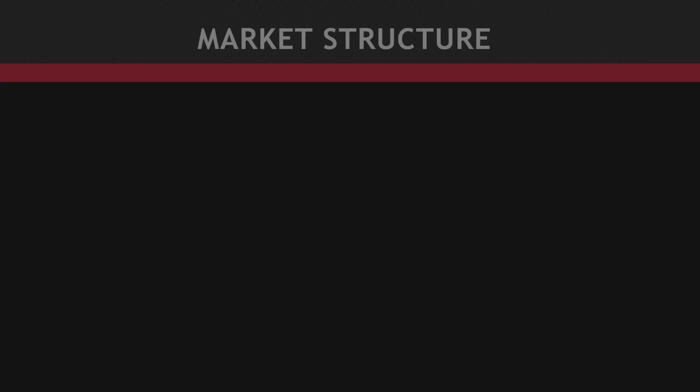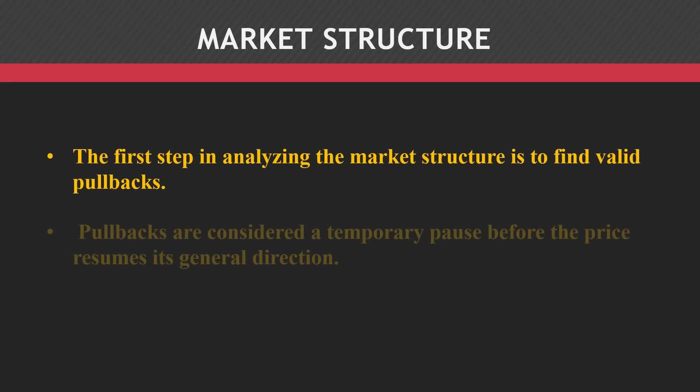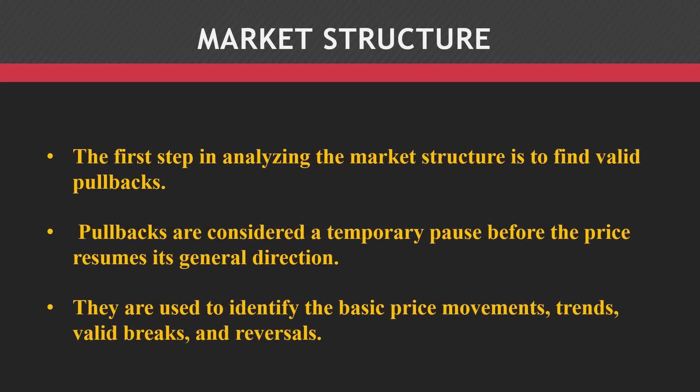The first step in analyzing the market structure is to find valid pullbacks. Pullbacks are considered a temporary pause before the price resumes its general direction. They are used to identify the basic price movements, trends, valid breaks, and reversals. So, how to identify a valid pullback?